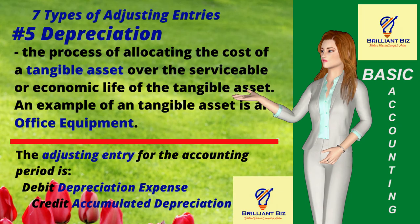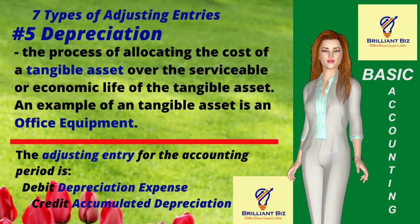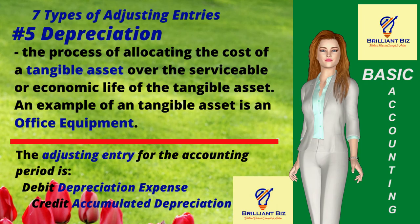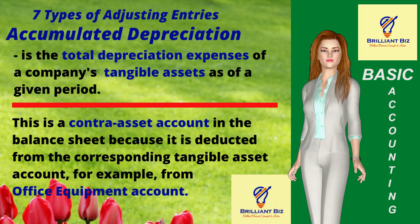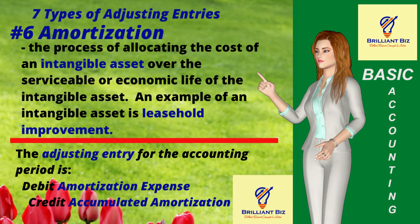Five: depreciation. This is the process of allocating the cost of a tangible asset over its serviceable life. An example is office equipment. For the accounting period, the adjusting entry is debit depreciation expense and credit accumulated depreciation by the same amount. The accumulated depreciation account is the total depreciation expenses of a company's tangible assets as of a given period.